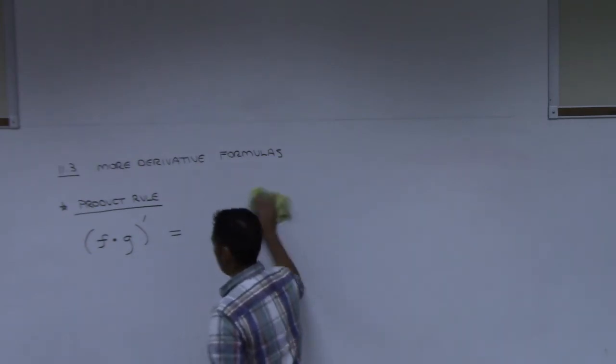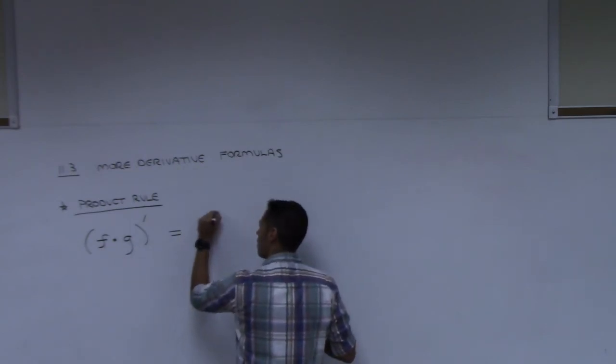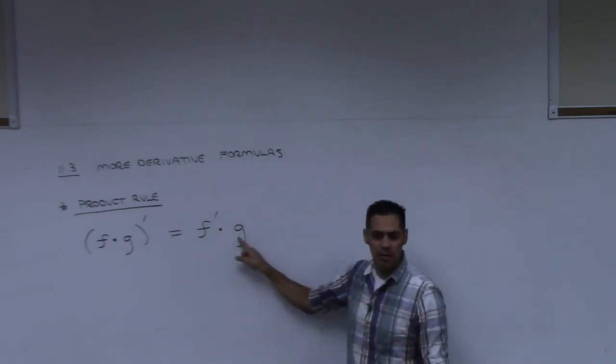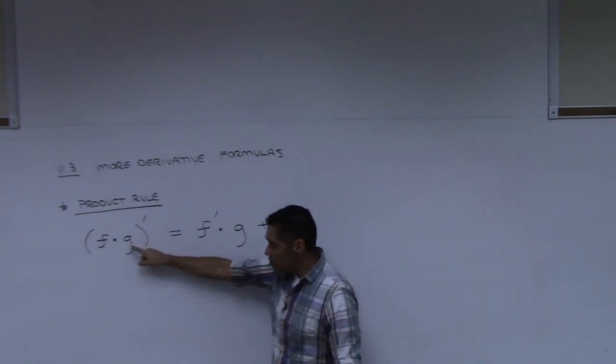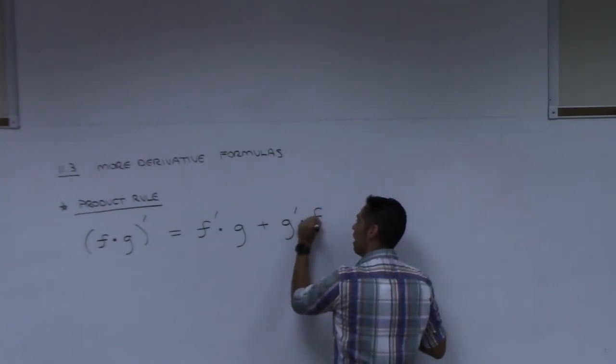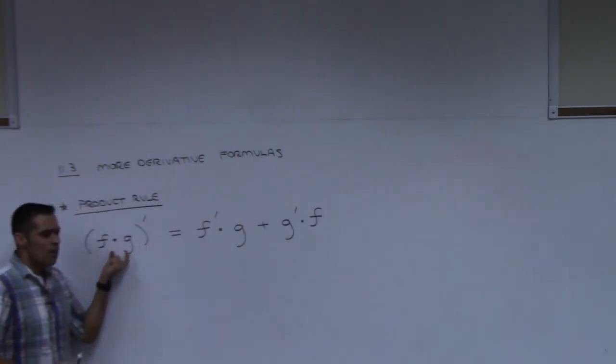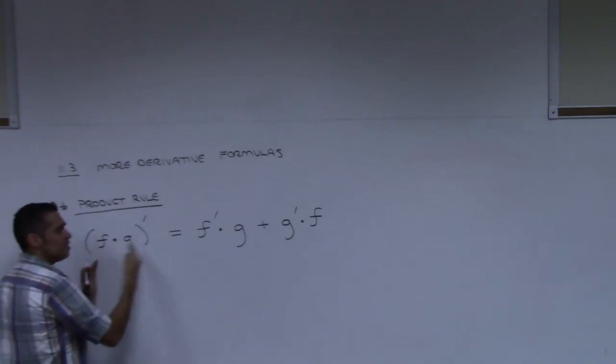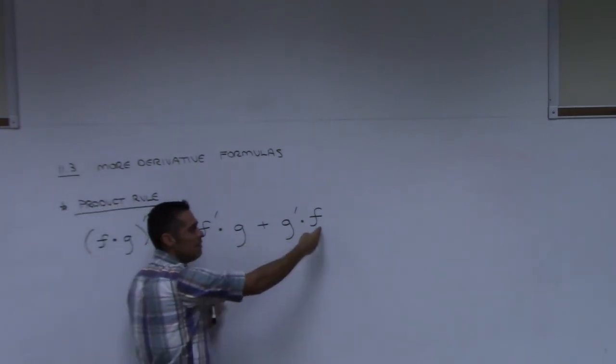Here's what it is. It's actually the derivative of this one times this one but without taking the derivative. Okay. Plus now you do take the derivative of the g function and then multiply that times f. So look at it this way. It's like if you have a product and you want to take the derivative, they have to actually take turns getting the derivative. First f gets the derivative and g nothing happens to it. Then you say plus, then it's g's turn to get the derivative and f doesn't have anything happen to it.